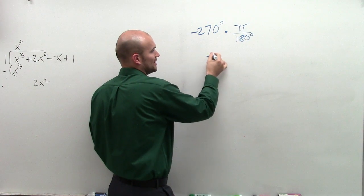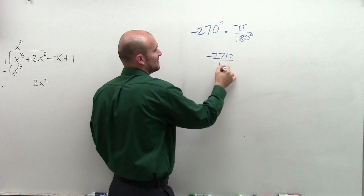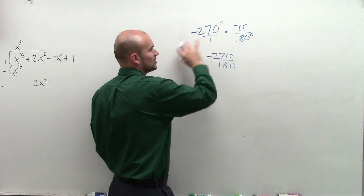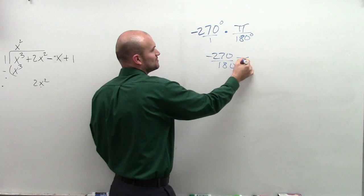So I have negative 270 divided by 180, right, if you were to multiply it across, times π.